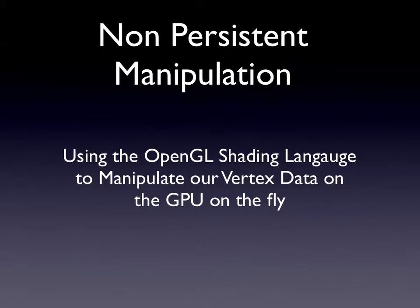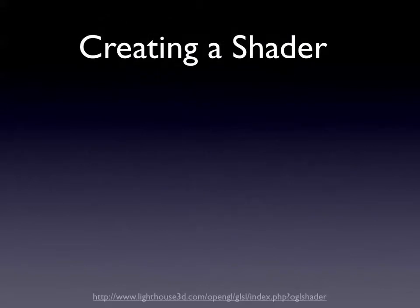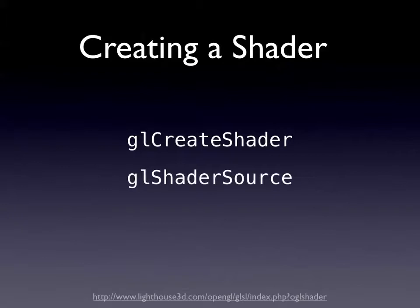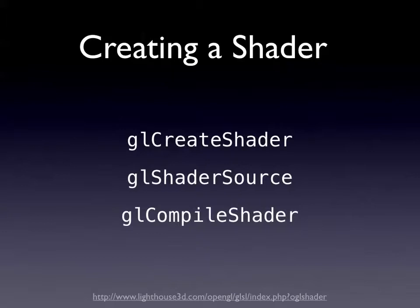So what we're going to talk about is using OpenGL shading languages to manipulate the vertex data on the GPU on the fly, which basically means we don't have to have any transfer between CPU and GPU — we can just manipulate all of these buffers on the GPU. In order to create a shader, you call GL create shader, then GL shader source and GL compile shader. The first creates memory for a shader; the second gives it the source code as a C array; and the third compiles it — if everything goes well, you'll have a working shader.